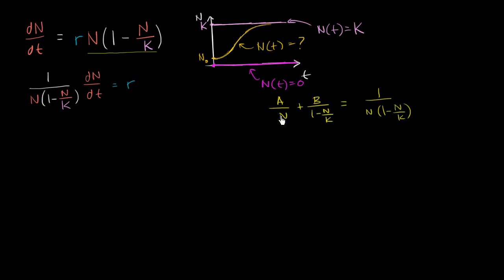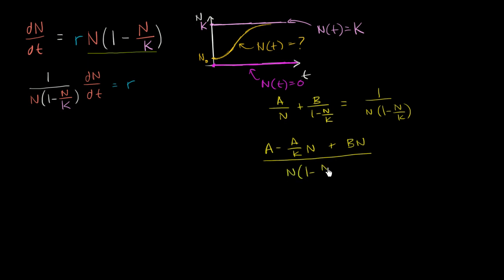Let's add those two fractions. A over n plus B over (1 minus n over k), combined over a common denominator of n times (1 minus n over k), gives us: [A times (1 minus n over k) plus Bn] over [n times (1 minus n over k)]. Expanding the numerator: A minus (A over k)n plus Bn. This needs to equal 1 over [n times (1 minus n over k)], so the numerator must equal 1. So we have A as the constant term and (B minus A over k) as the coefficient of n.